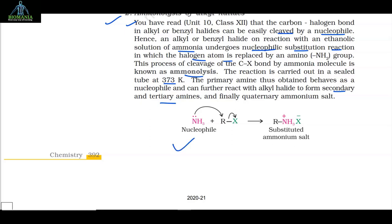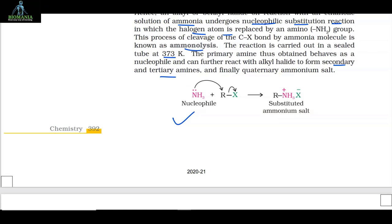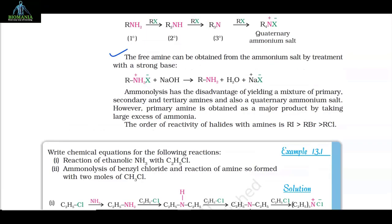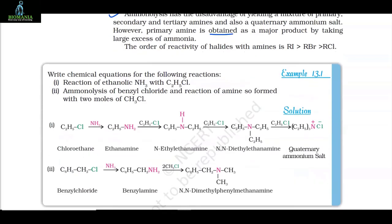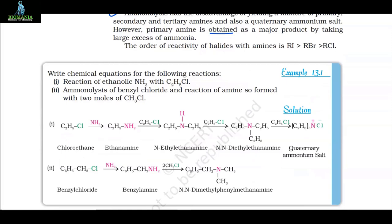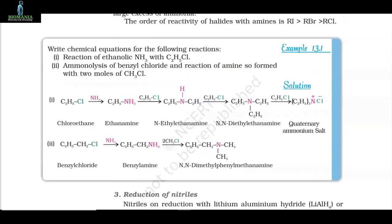The free amine can be obtained from the ammonium salt by treatment with a strong base: RNH3X + NaOH → RNH2 + H2O + NaX. Ammonolysis has the disadvantage of yielding a mixture of primary, secondary and tertiary amines and also a quaternary ammonium salt. However, primary amine is obtained as the major product by taking a large excess of ammonia. The order of reactivity of halides with amines is RI > RBr > RCl.